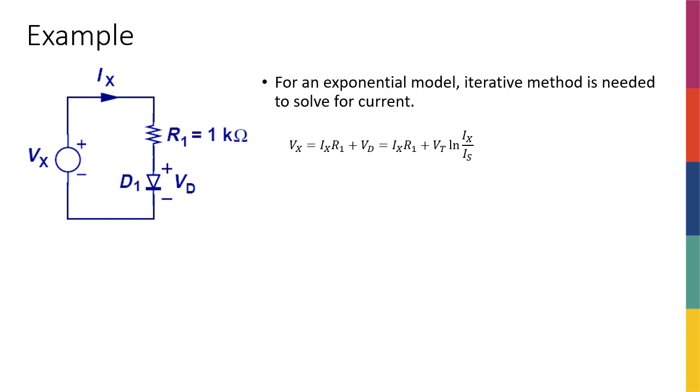Okay let's get started with solving the most basic kind of diode circuit. Let's say that I have a voltage source here called Vx, I have a current of ix flowing through the circuit, and I have a simple resistor, one kilo ohm, in series with a diode. The question is find ix.